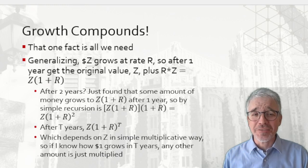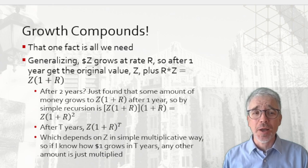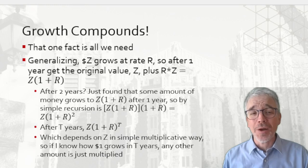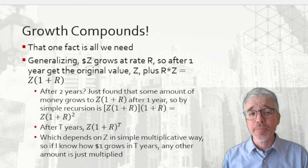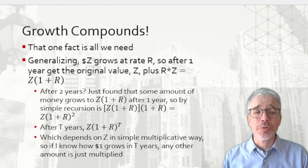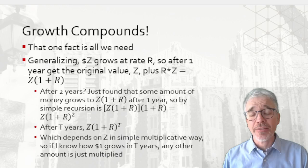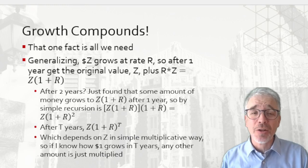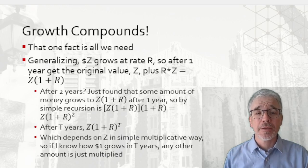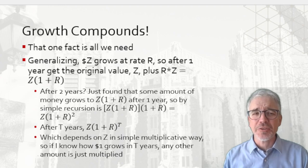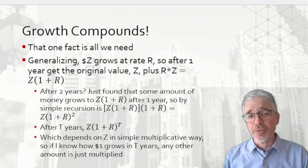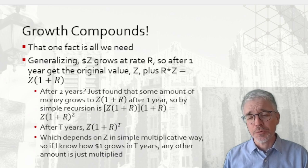Now, one of the things to notice here is the answer depends on Z in a very simple multiplicative way. If you know how $1 grows after two years, then you know how any other amount would grow, whether $100,000, or $10,000, or whatever. However, in math notation, I can take Z outside the parenthesis. Just remember math rules about percentages. 5% is 0.05 as a decimal. 10% is 0.10 as a decimal. 2% is 0.02, etc.